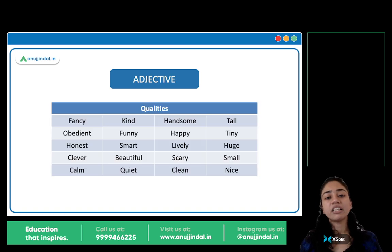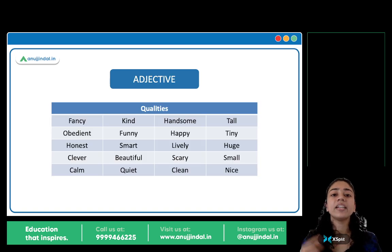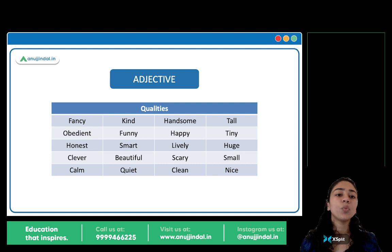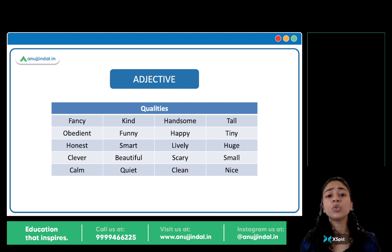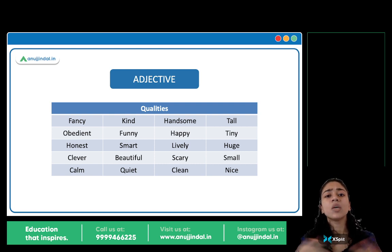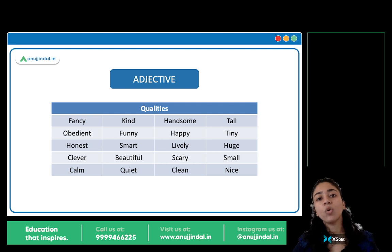Next is adjective. Adjective kya hai? Adjectives are basically qualities: fancy, obedient, honest, clever, calm, smart, intelligent, funny, beautiful, quiet, handsome, happy, scary, tall, short — sare qualities hai. Toh jo bhi qualities hote hai, woh adjectives hote hai.